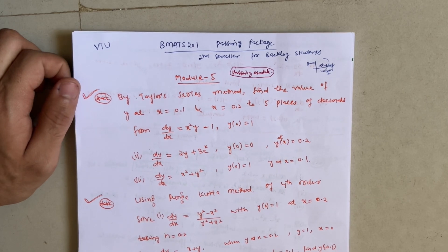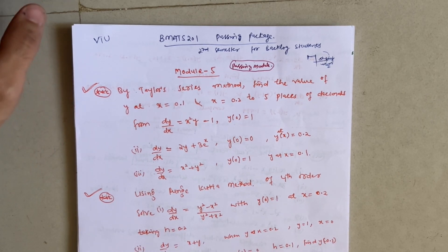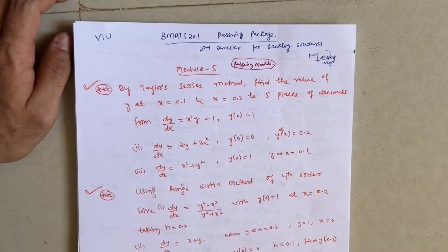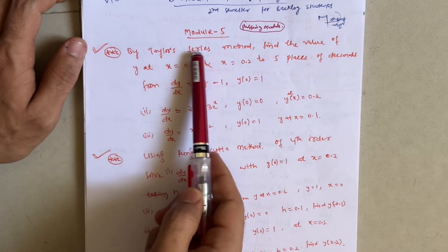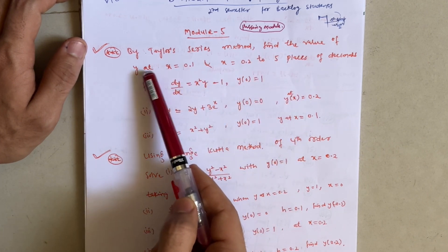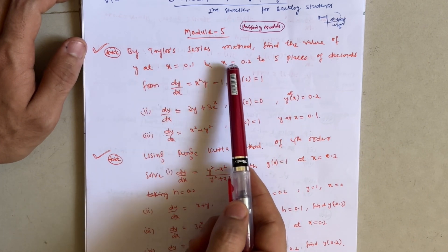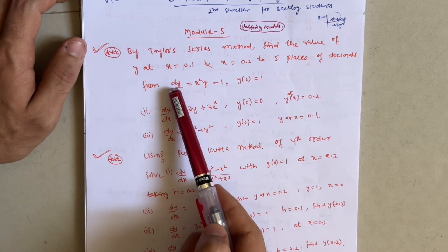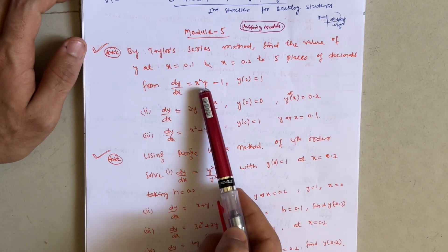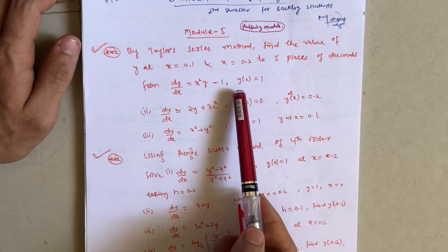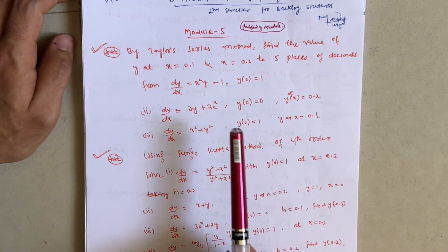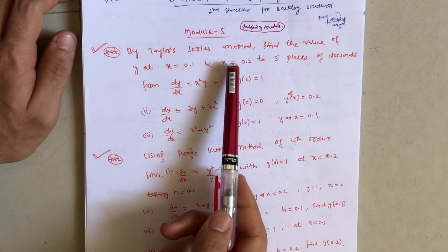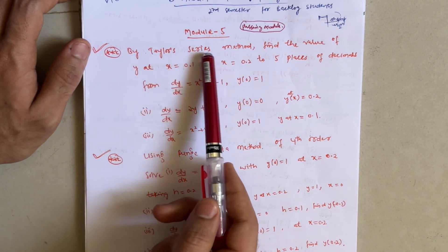I have mentioned here which module is passing and what are the repeated questions. Let me discuss the passing module first — Module 5, in which we have to cover the Taylor series method. By Taylor series method, find the value of y at x = 0.1 and x = 0.2 to 5 places of decimals. The differential equation given is dy/dx = x²y − 1, y(0) = 1. Problem-solving videos are available; I have recently uploaded a Taylor series method video for 18 scheme students which you can also refer to.